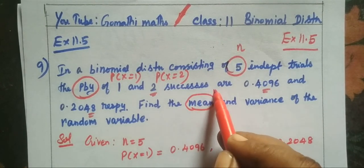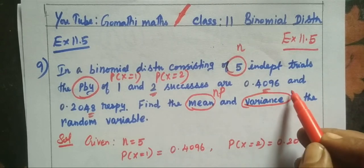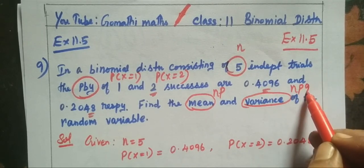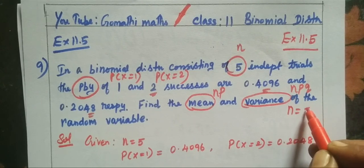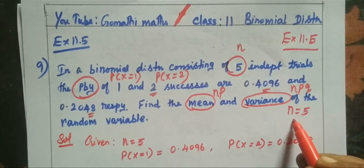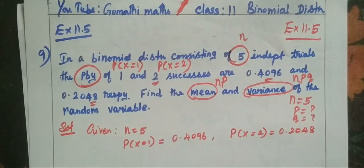Find the mean and variance of the random variable. Mean we find using np, variance we find using npq. For that we need the values. Already n value is given in the question. We need to find p and q.